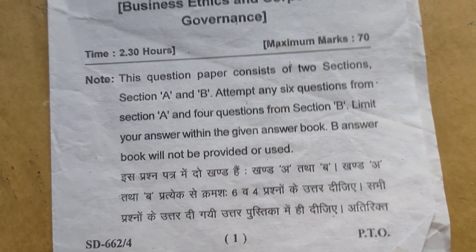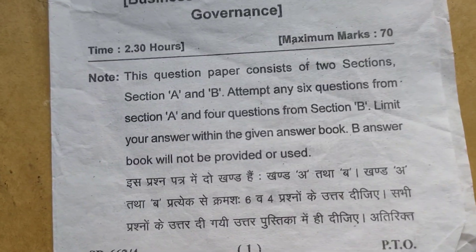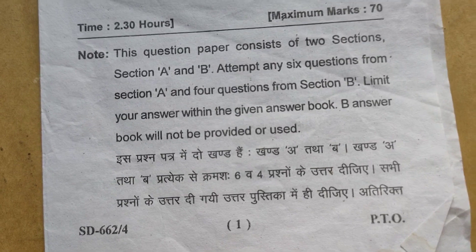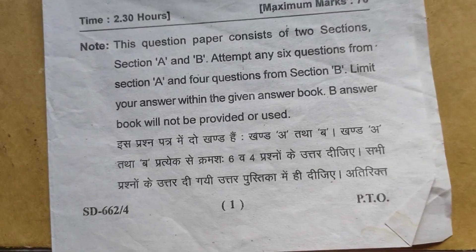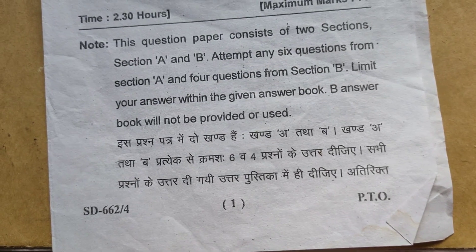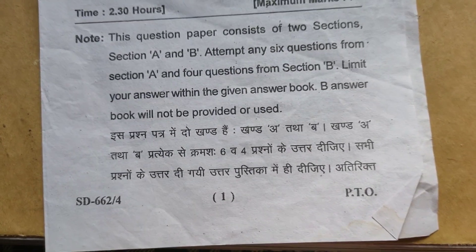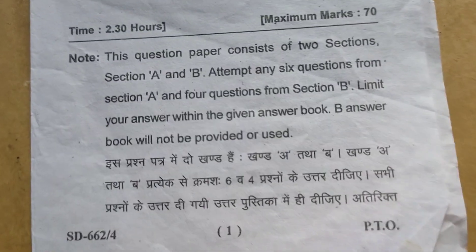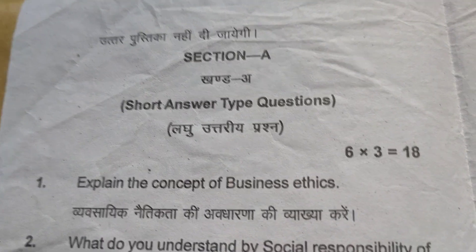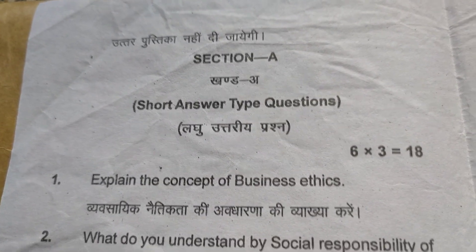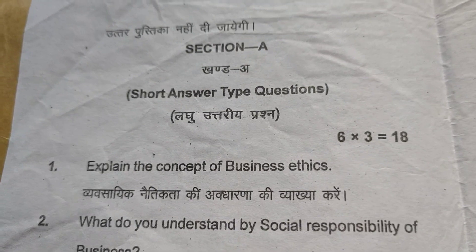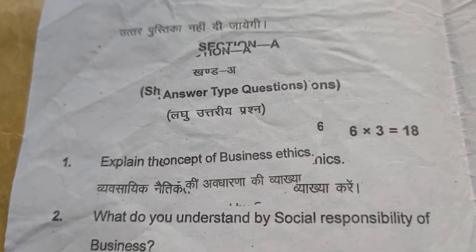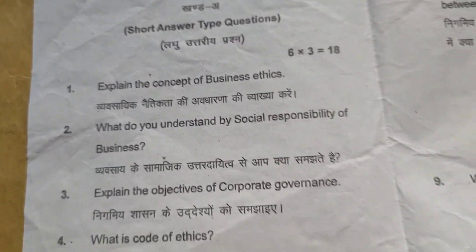This question paper has 2 sections: Section A and Section B. Section A has 6 questions which you have to attempt out of 8 questions. Section A is short answer type questions — 6 questions of 3 marks each, totalling 18 marks.